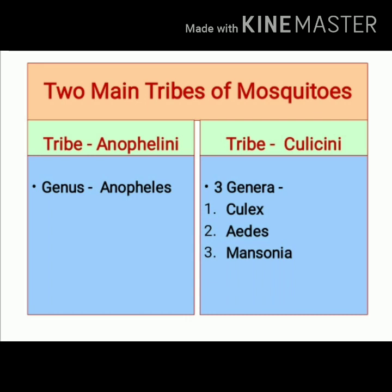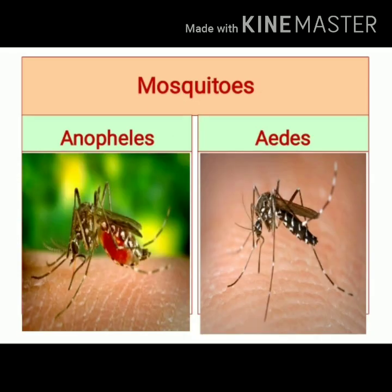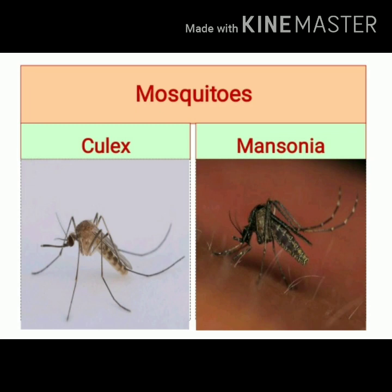Tribe Culicine includes three genera: Culex, Aedes, and Mansonia. These four genera are related to disease transmission in India. In this slide you can see an image of an Anopheles mosquito and an image of an Aedes mosquito. Here you can see an image of a Culex mosquito and an image of a Mansonia mosquito.